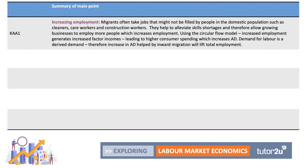Developing the point using the circular flow model: increased employment generates increased factor incomes — wages, salaries, bonuses — which leads to higher consumer spending, which then increases aggregate demand (C + I + G + X − M). Since the demand for labor is a derived demand, an increase in AD helped by inward migration will tend to lift total employment. In theory, 250,000 people coming in per year increases the working population and drives higher demand for goods and services.